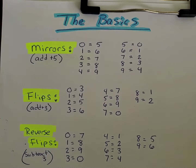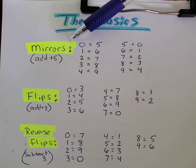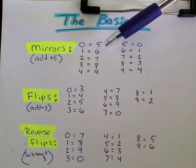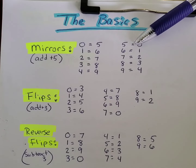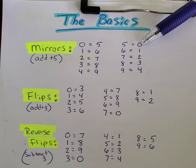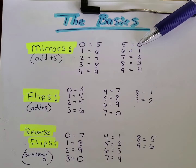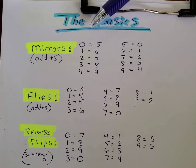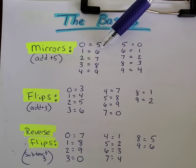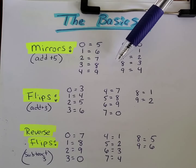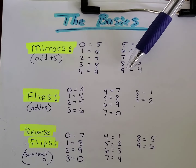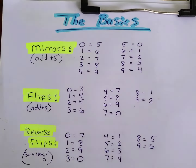Starting off with the basics, we're looking at mirrors. A mirror is when you add five to a number. So if you add five to zero, you get a five. If you start from a five and add zero more, you get zero — because you're adding five, it gives you 10, and because it's lottery math, you only keep what's on the right-hand side, so it gives you the zero. You can screenshot this chart and see where your one can be a six or six can be a one; two can be a seven and seven can be a two; three can be an eight and eight can be a three; four can be a nine and nine can be a four. Those are mirrors.